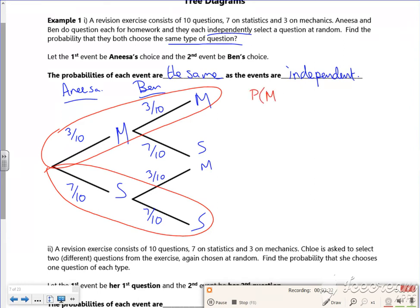...3 over 10 times 3 over 10, which is 9 out of 100.